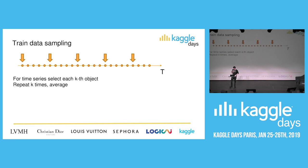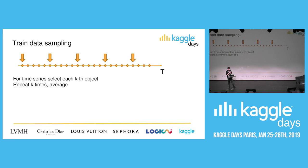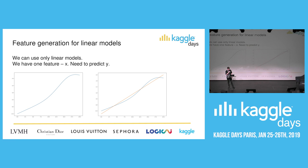Another trick with training data sampling: if we have a very big time series — for example, several millions — the problem is that nearby objects are very similar, because building features in the dataset always uses lag features, statistics, or other things, so models find local dependencies rather than global ones. To avoid this, you can select not all objects in training data, but select every k-th object. Then repeat it k times and average the results. It's also very helpful.